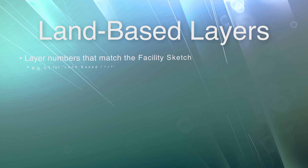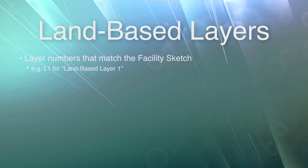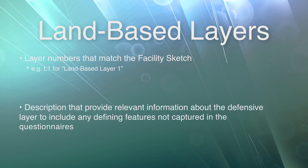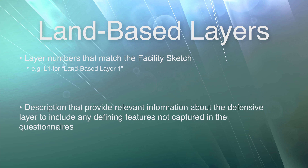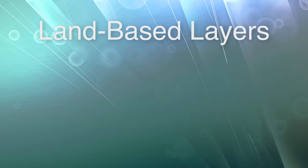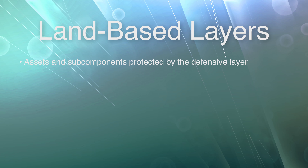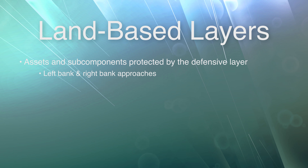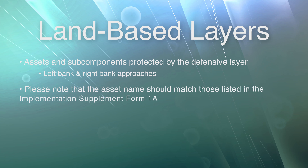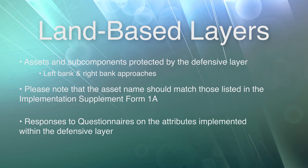For each land-based defensive layer identified in the facility sketch, complete the implementation supplement form 1B questionnaire set. In doing so, provide layer numbers that match the facility sketch — for example, L1 for land-based layer 1 — descriptions with relevant information about the defensive layer including any defining features not captured in questionnaires, the assets and subcomponents protected by the layer and the left bank or right bank approaches from which it provides protection. Note that asset names should match those listed in implementation supplement form 1A. Provide responses to questionnaires on the attributes implemented within the defensive layer. This process must be repeated for each individual defensive layer.